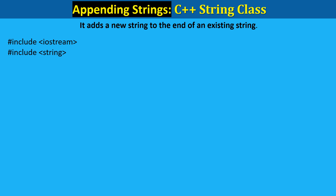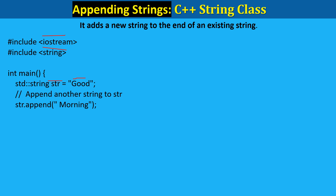Strings can also be appended using the append method, which adds a new string to the end of an existing string. Include iostream and the string library. Step 1 — declare and initialize the string: string str = "good". Step 2 — the append method is used to add " morning" to the end of str. After the operation, str becomes "good morning". Step 3 — output the modified string: cout prints the value of str to the console. The output will be "good morning".